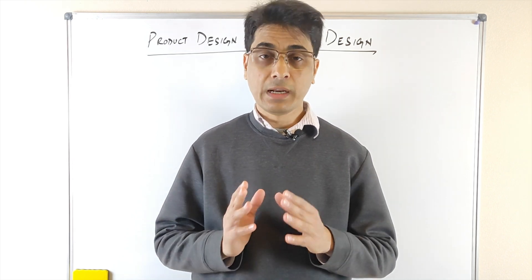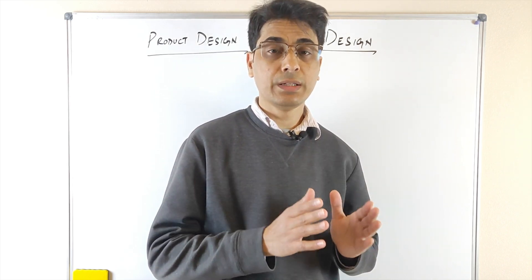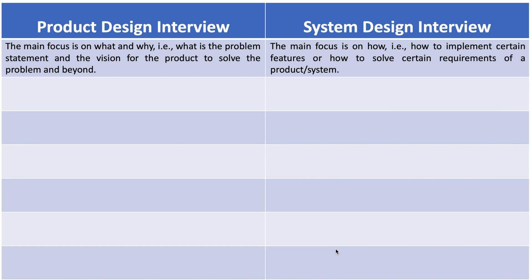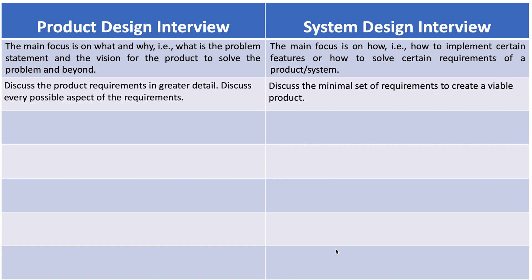Let's discuss the differences between a product design interview and a system design interview in tabular form. In a product design interview, the main focus is on 'what' and 'why' — that is, what is the problem statement and the vision for the product. In a system design interview, the main focus is on 'how' — how to implement certain features or solve requirements. In product design, a candidate discusses product requirements in greater detail covering every possible aspect, whereas in system design, the candidate discusses the minimal set of requirements to create a viable product.